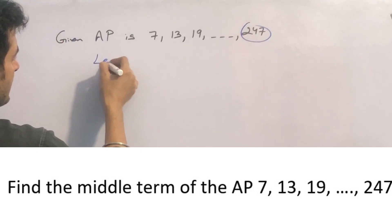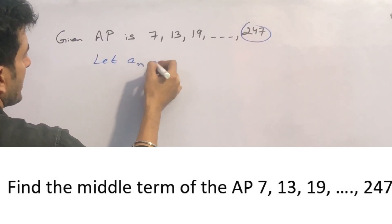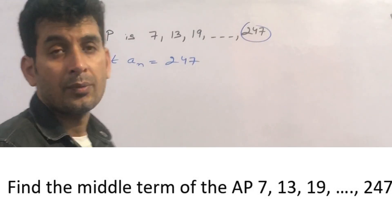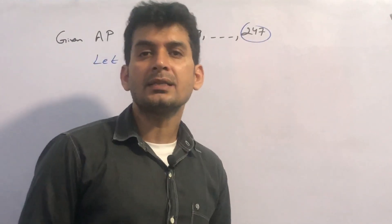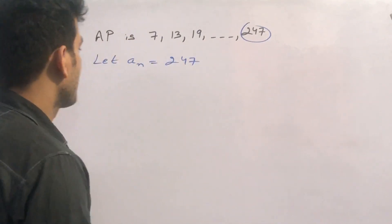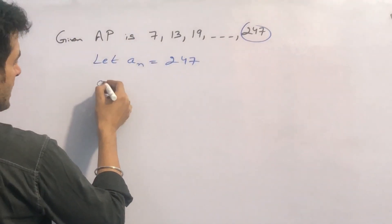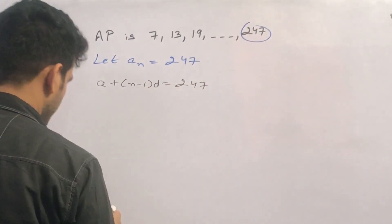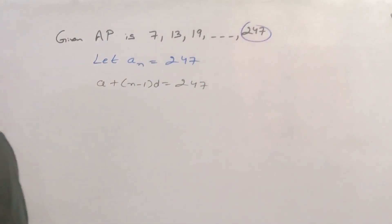So we can say that, let AN is equal to 247. Now, value of AN, formula of AN is A plus N minus 1 into D. So AN can be written as A plus N minus 1 into D and it will be equal to 247.